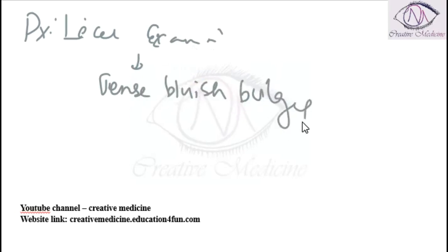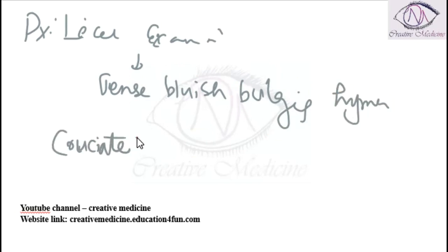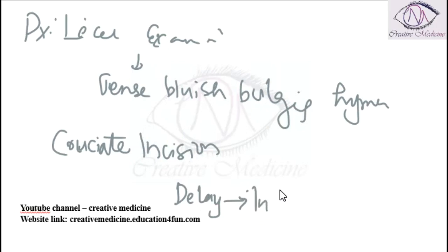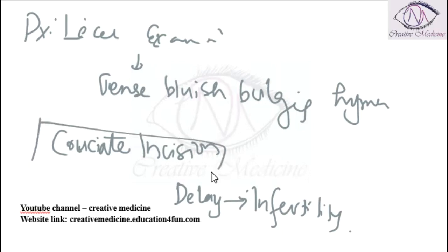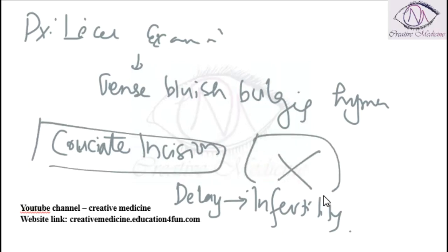On management, a cruciate incision is made at the hymen at the earliest. If there is any delay, it can result in infertility due to endometriosis. You should do the cruciate incision at the hymen so that the blood can go out, or else there can be infertility due to endometriosis.